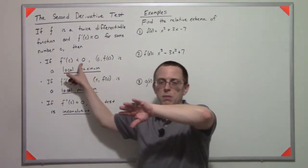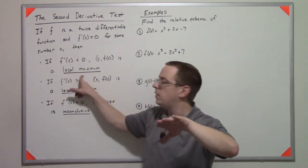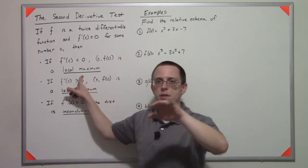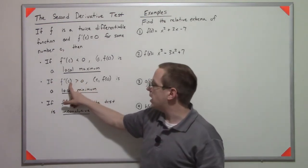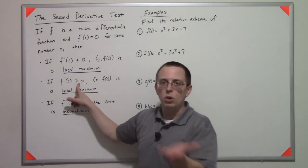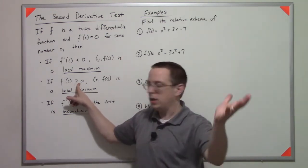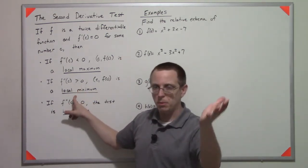If the second derivative is negative, meaning it's concave down, that means we have a local or relative max. If the second derivative is positive or it's concave up, then we have a local minimum at that point.